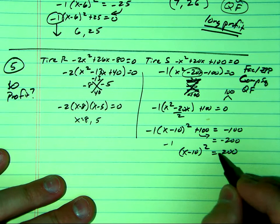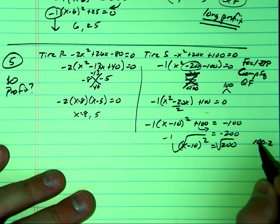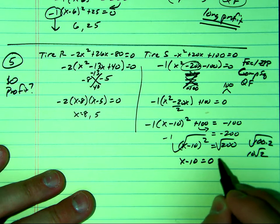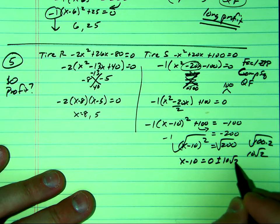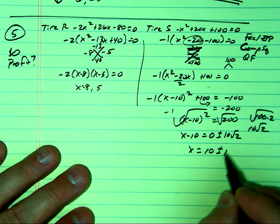So what's the square root of 200? That's going to be 100 times 2, right? Which is 10 rad 2. This looks ugly. x minus 10 equals plus or minus 10 rad 2. And then that's your root right there. 10 plus or minus 10 rad 2.